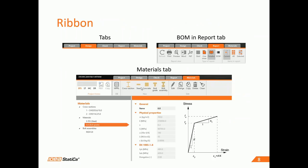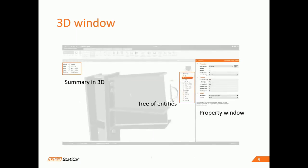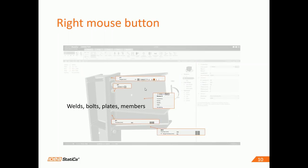We have also updated the 3D scene rendering technology and moved the summary overview into the 3D window. From my point of view, the game-changing control is the tree of entities. As you can see, it contains all defined members, load effects, and manufacturing operations. It brings effective management of the model, enabling activation and deactivation of all items and selection of items to edit in the property window.